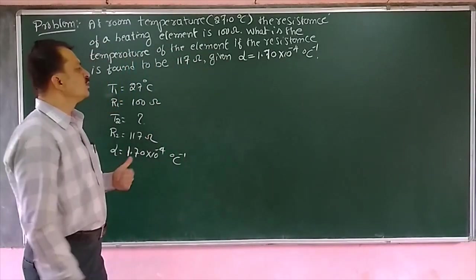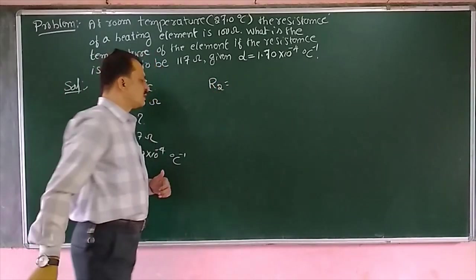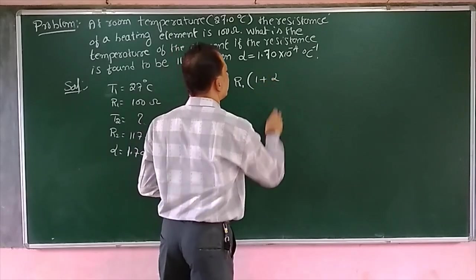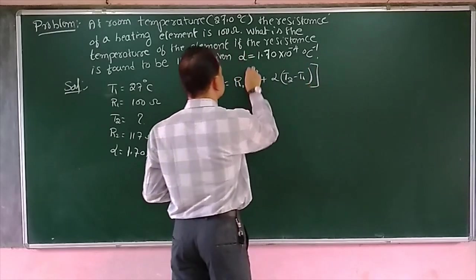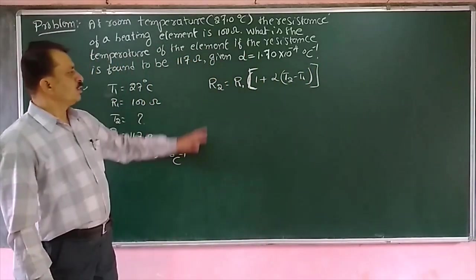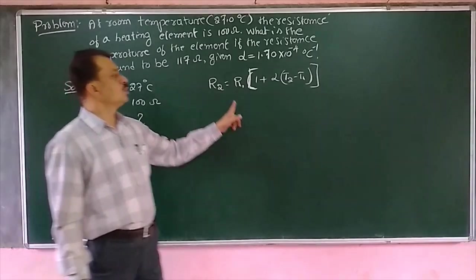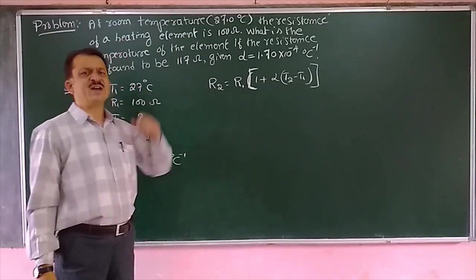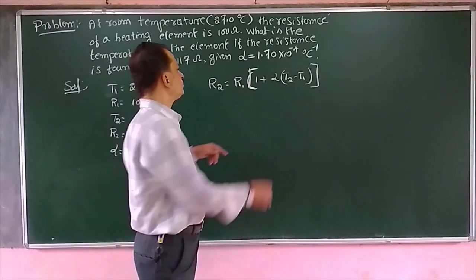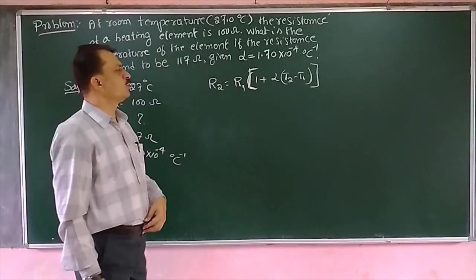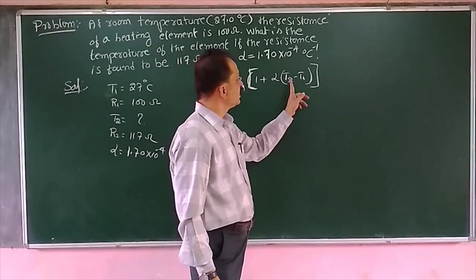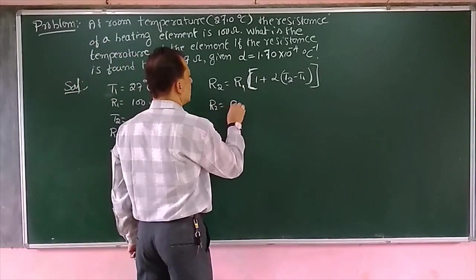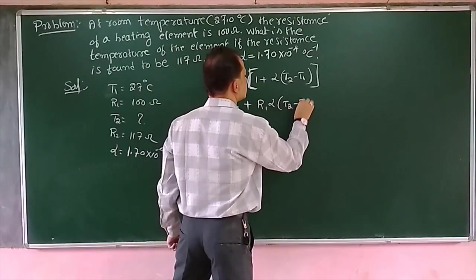The solution: at temperature T1 equals 27 degree Celsius, resistance R1 equals 100 ohms. We have to calculate the higher temperature T2 at which resistance R2 equals 117 ohms. The temperature coefficient alpha is 1.70 into 10 to the power of minus 4 per degree Celsius. We know the formula: R2 equals R1 into 1 plus alpha into T2 minus T1.